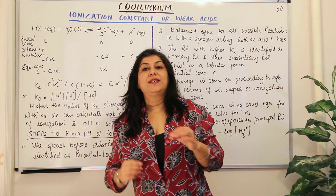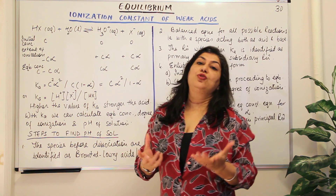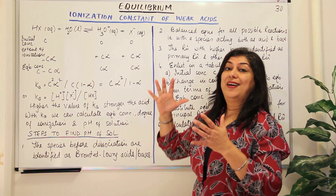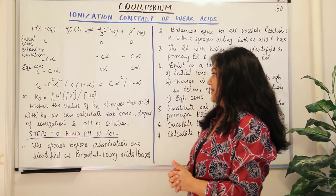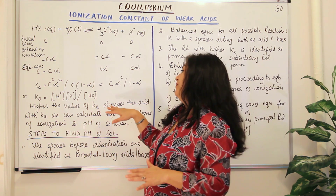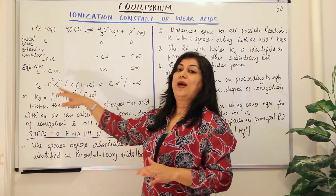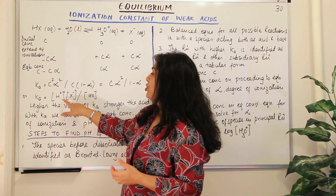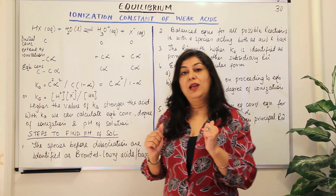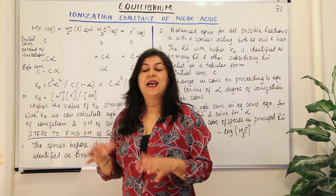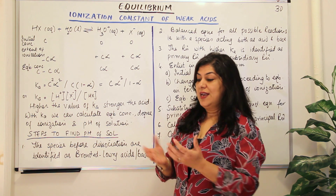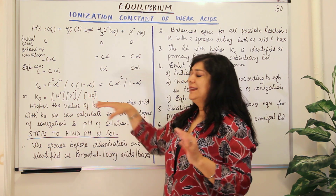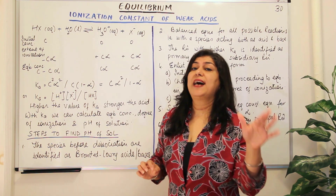Once you know this dissociation constant, you can determine how strong or how weak the acid is. The higher the value of Ka, the greater the numerator relative to the denominator — meaning more products are formed. The more the concentration of products, the higher the value of Ka, which means the higher the value of Ka, the stronger the acid.